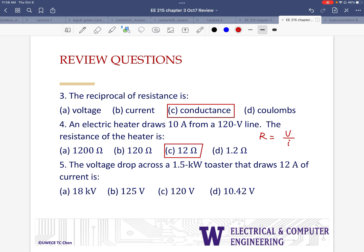Next, the voltage drop across a 1.5 kilowatt toaster that draws 12 amps of current. This is going to be the power equation, which is multiplication of the voltage across an element and the current through it. We are given that the power is 1.5 times 10 to the 3, and we are also given current. And we find voltage by just simply dividing the two, and it should give us 125 volts.